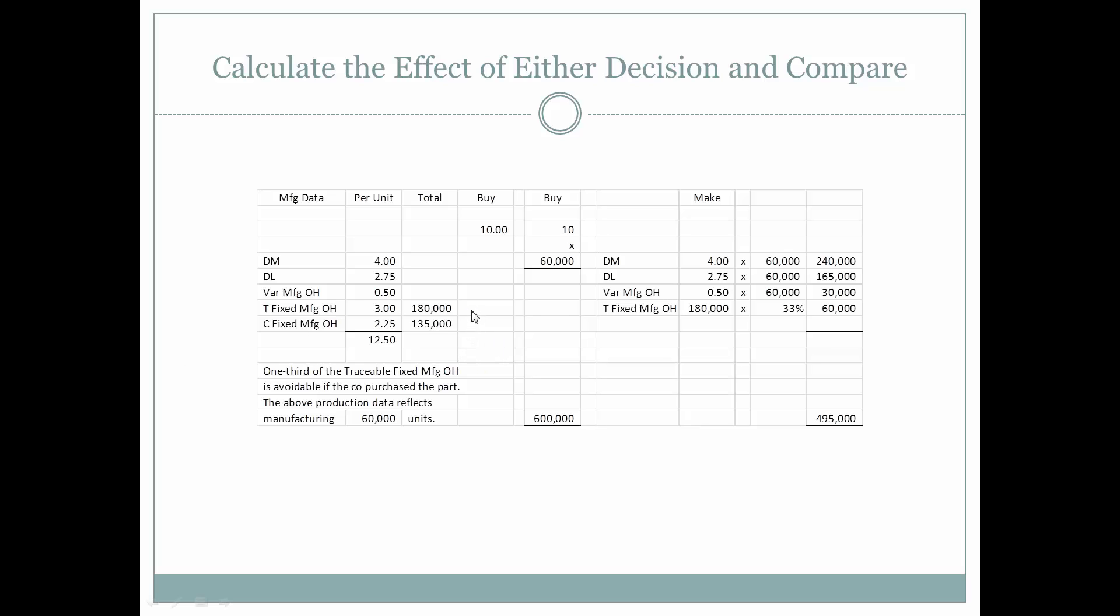The above production data reflects manufacturing 60,000 units. In order to compare, let's take the price that we could get from an outside vendor of $10 per part, multiply it by the 60,000 parts we expect to need, and that will yield a total of $600,000.